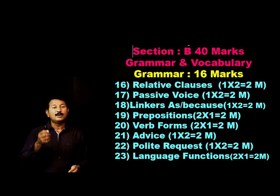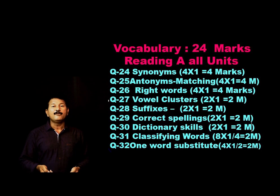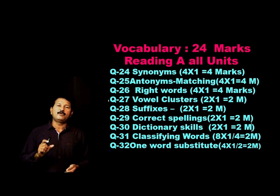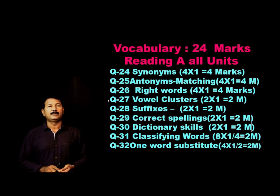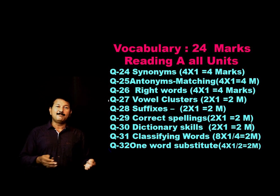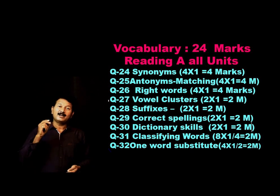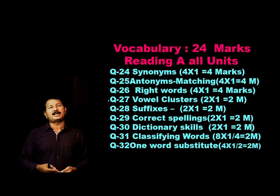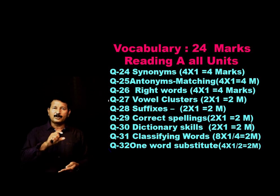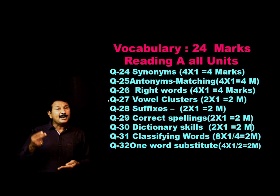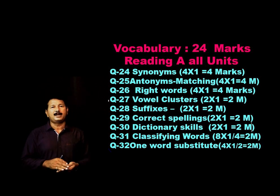Now we will move to vocabulary. Vocabulary will have 24 marks. Both vocabulary and grammar — you should go through the textual content and the exercises after every unit. This time we are very, very fortunate. Most of the questions are alternative types, not just match-the-following. If you are thorough with your text, you can score well. Question number 24 is synonyms — you will get a passage, and from a box of five or six options, you have to read the sentence and identify the meaning according to context.